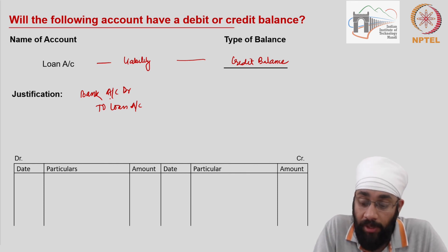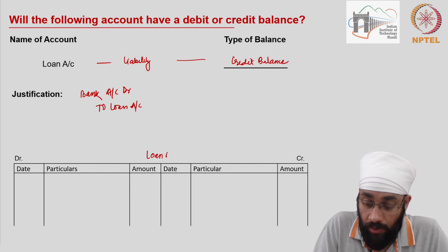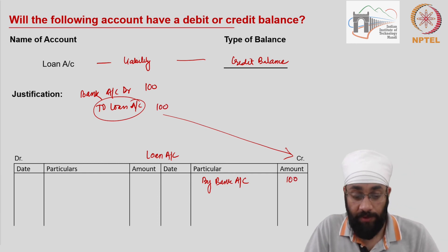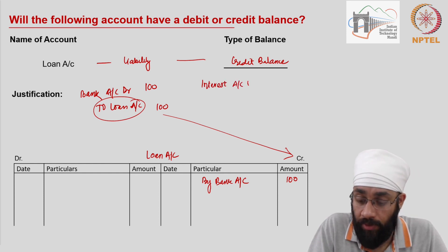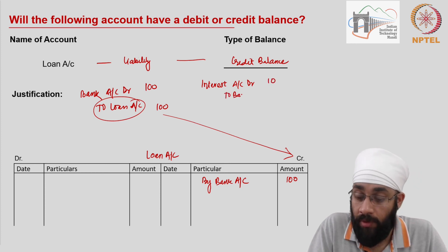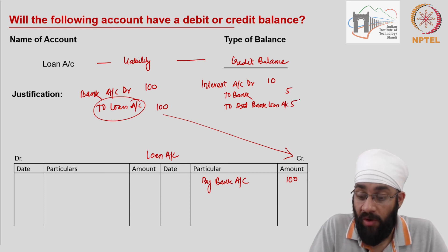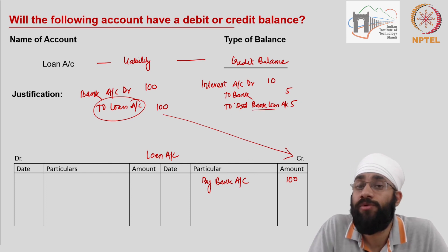None of that changes the fact that the bank loan account or liability account will always have a credit balance. In the loan account, the first entry — bank loan credited — goes on the credit side: by bank account, 100. For interest: interest account debit, say 10; you paid 5, and the remaining 5 are added to the bank loan account — so bank loan account is credited again by 5. Alternatively, it could become an outstanding interest account, which is also a liability.